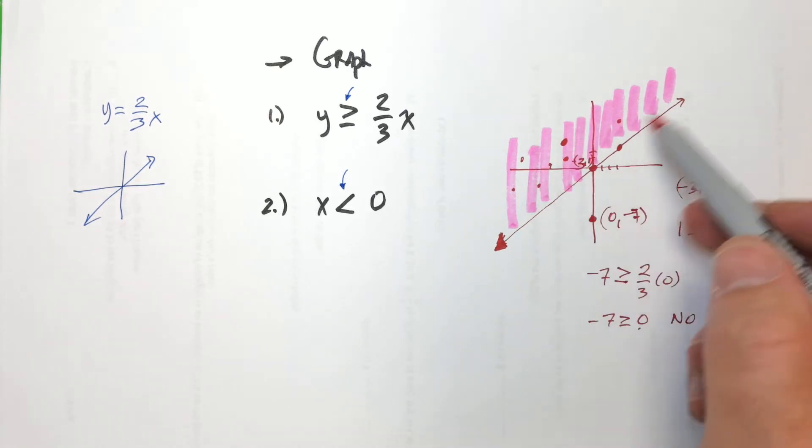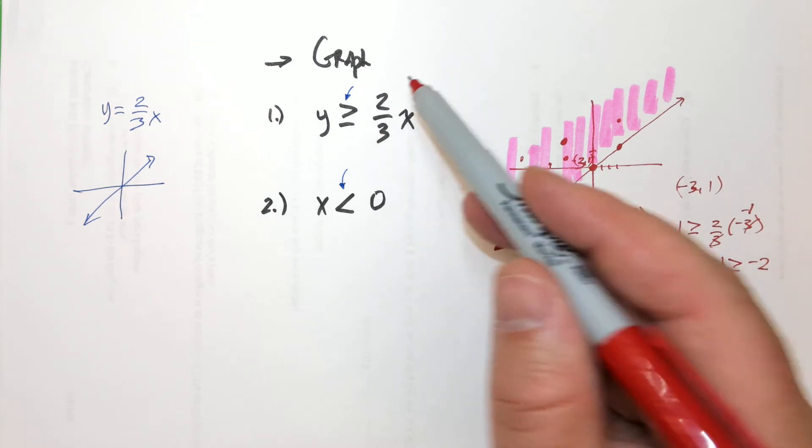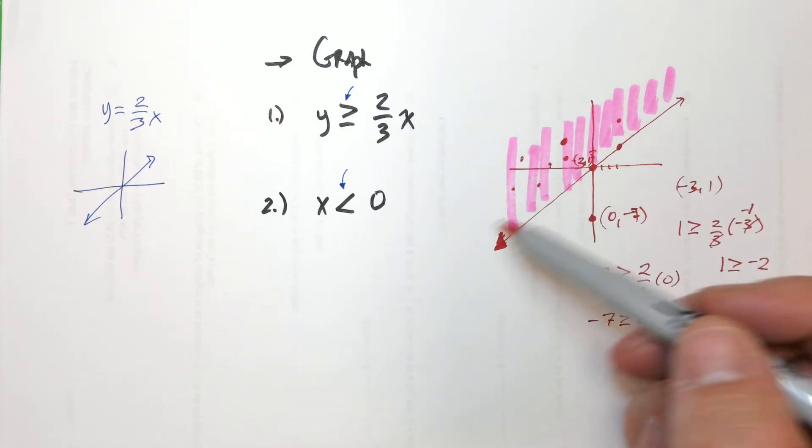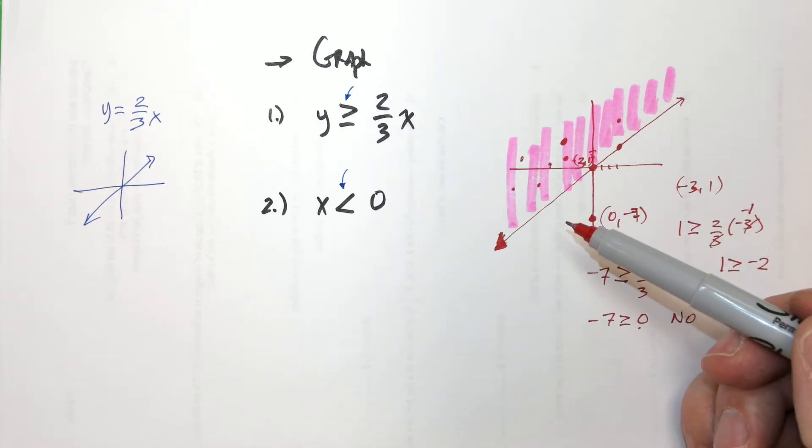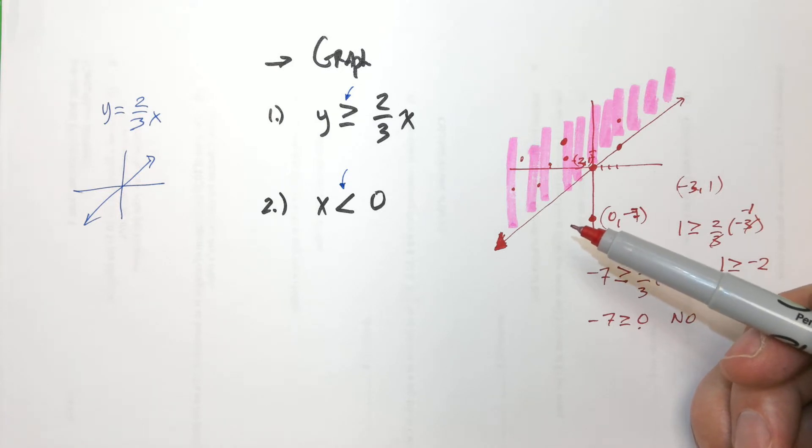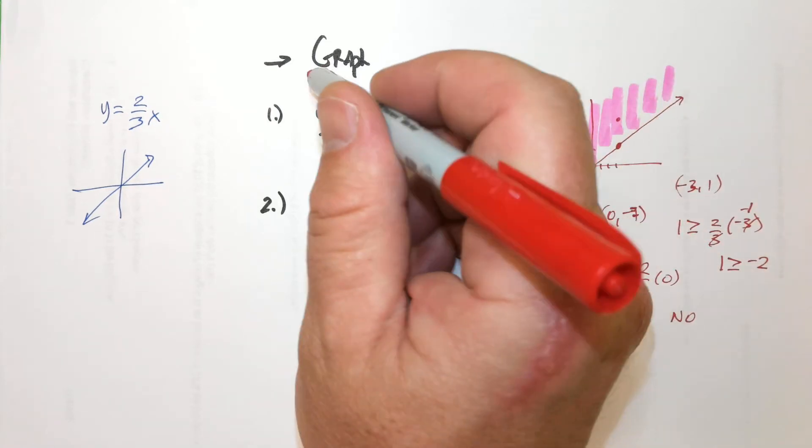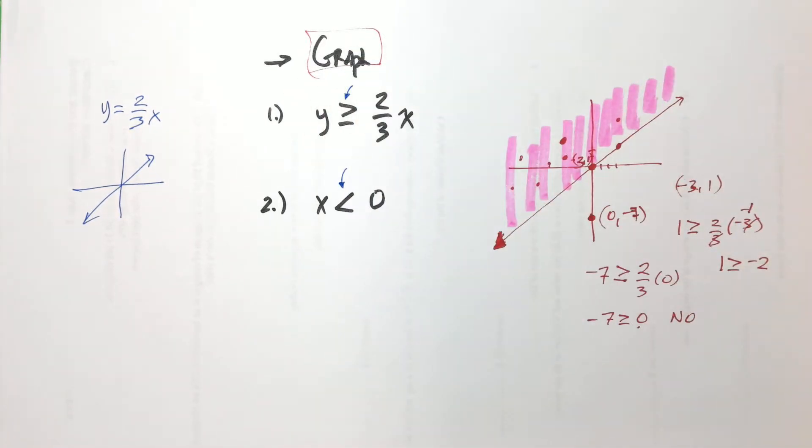So all of these points that are underneath the shading are all answers. And when you're graphing, you're drawing a picture of all the answers. It doesn't matter how you get your graph. And I think actually that's where your disconnect is. It doesn't matter how you get your graph. But your graph has to be a picture of all the answers. So if your graph is a picture of all the answers, you're good.